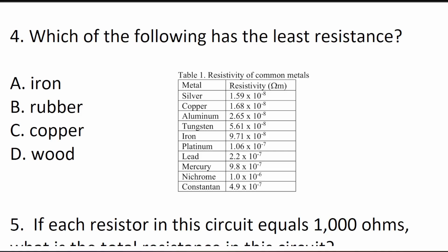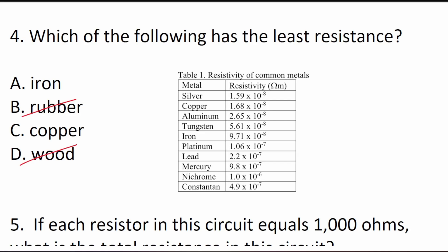Question 4 asks: which of the following has the least resistance? Things with high resistance make it hard for electricity to flow through — rubber and wood are good examples. Metals have very low resistance and electricity flows through them easily. Here's a table of resistivity of common metals, and you can see that copper has less resistance than iron. Most electrical lines going to your home are made of aluminum (older) or copper (newer). So the answer is copper.